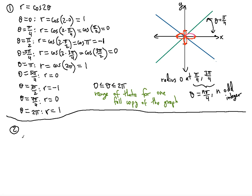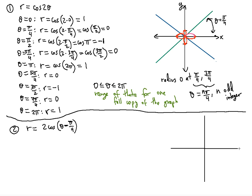Now the second example: r = 2cos(θ - π/4). Notice that we are not multiplying theta by an integer other than 1 — instead we have a phase shift. This tells us right away that it's a circle equation, just not centered at the origin.